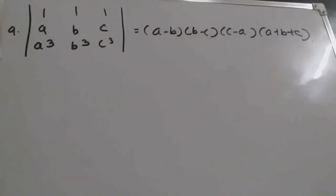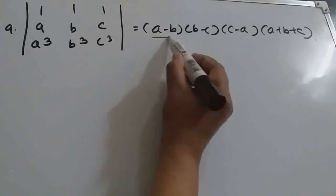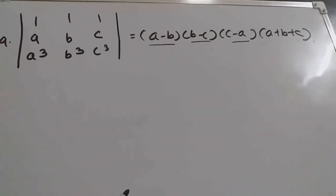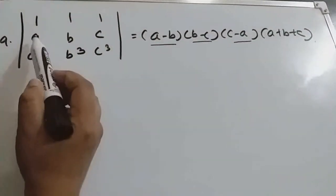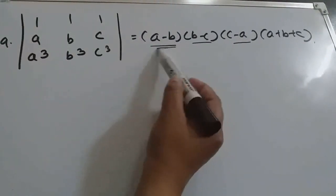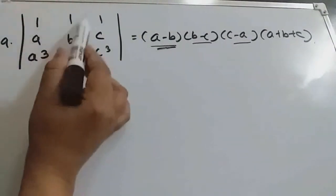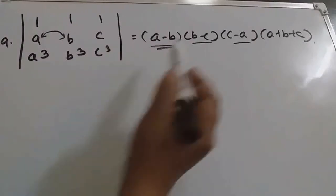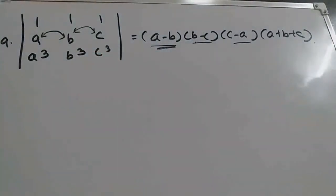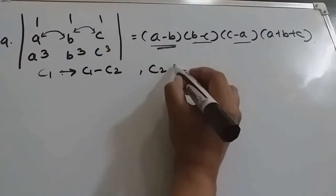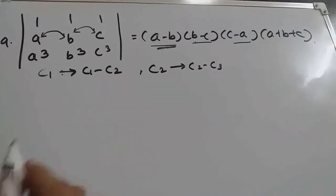Question number 9: this determinant is equal to the right hand side expression given. Here also if you observe, we have A minus B, B minus C, C minus A. You should observe from the right hand side what operation you can do. From row operations you won't get anything useful since entries are A minus A cubed, B minus B cubed. Because we want A minus B, we should do column operations. So we will do C1 minus C2 to get A minus B, and C2 minus C3 to get B minus C.